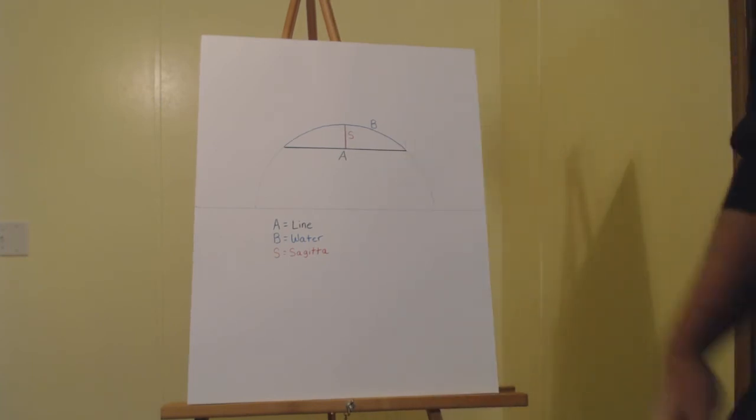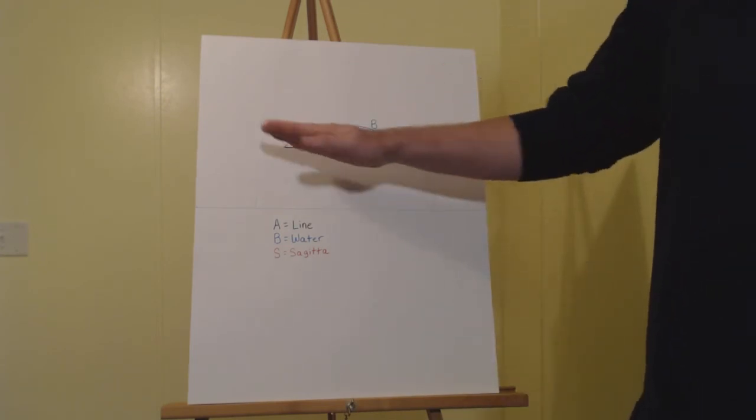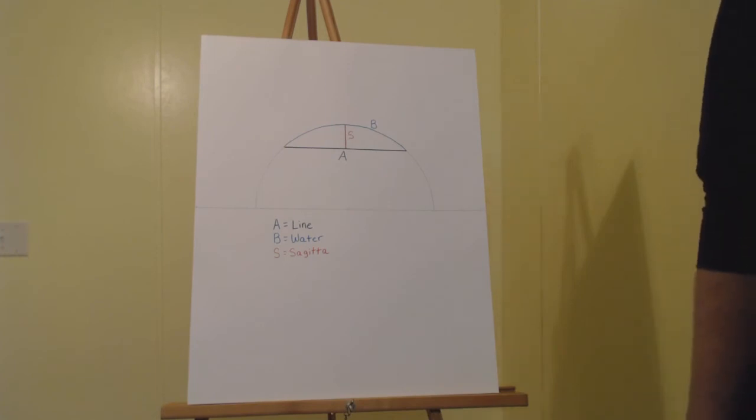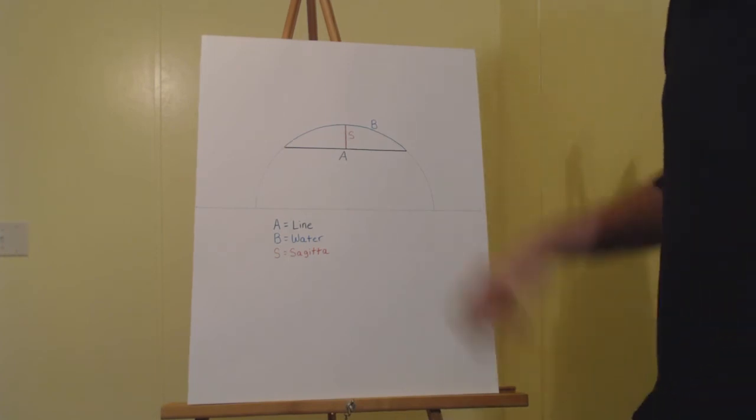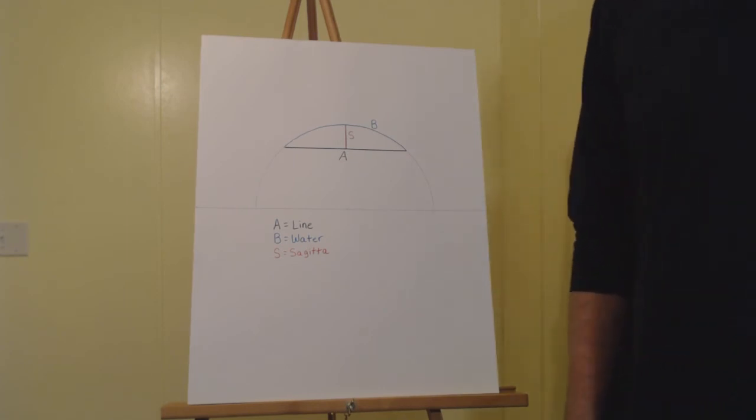In the second measurement, the line, A, will be erred slightly downward so that if its slight downward slope affects the middle measurement, it will affect it in a way that increases our sagita measurement. In this example, the line will be slightly denser than the water.